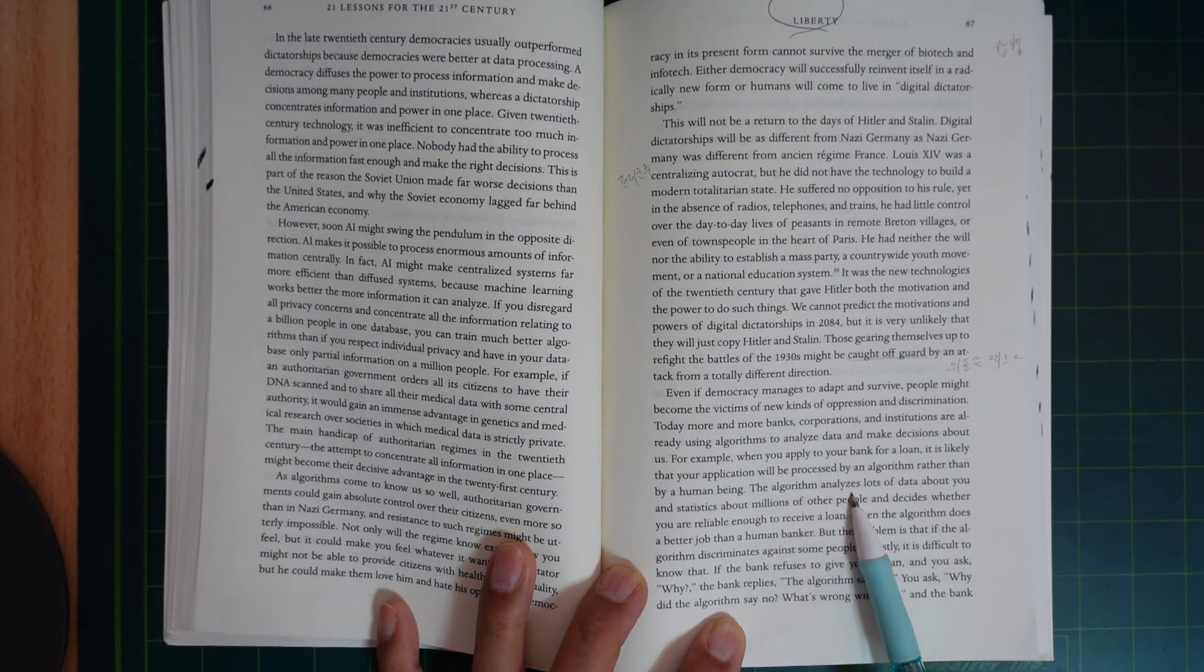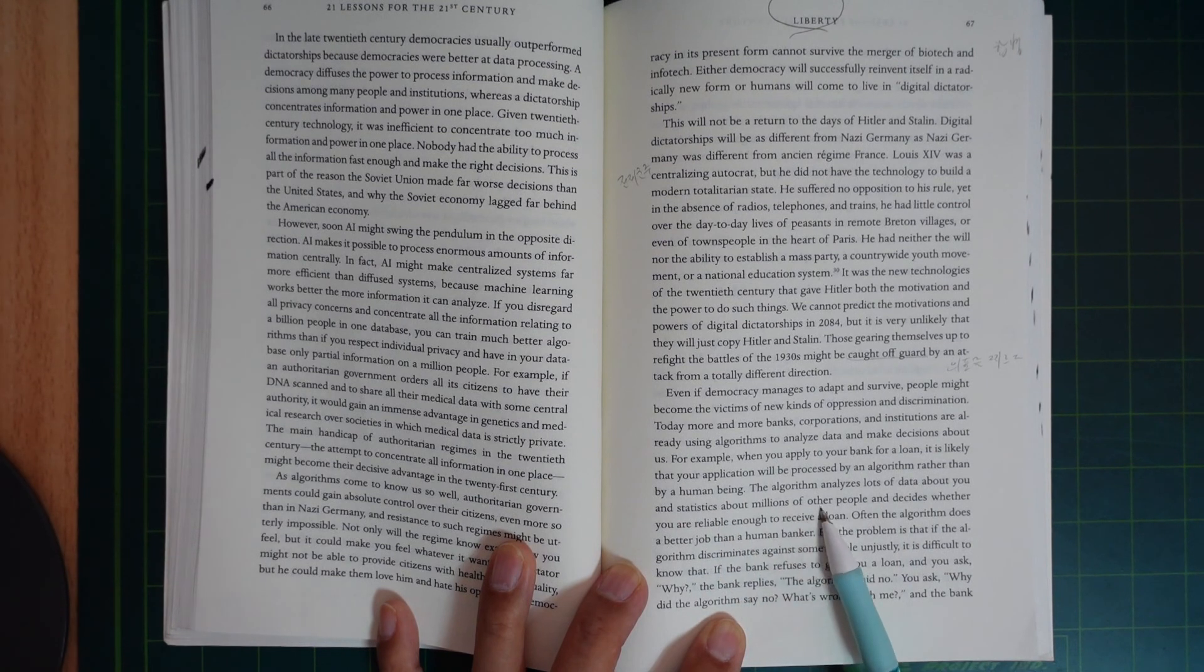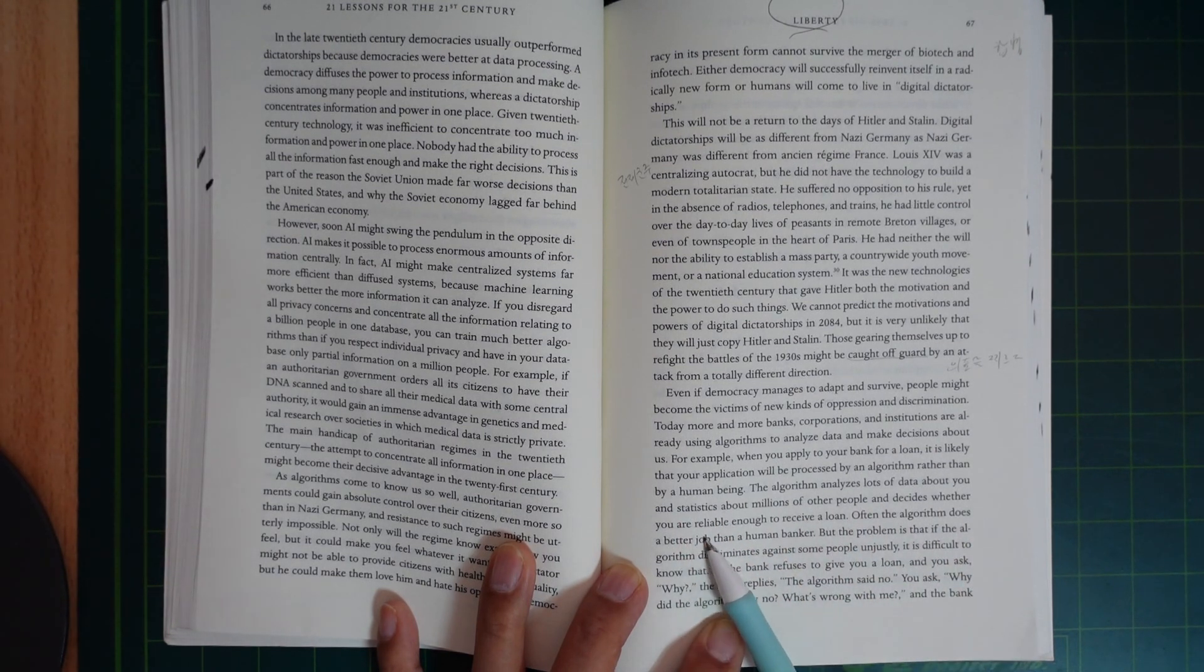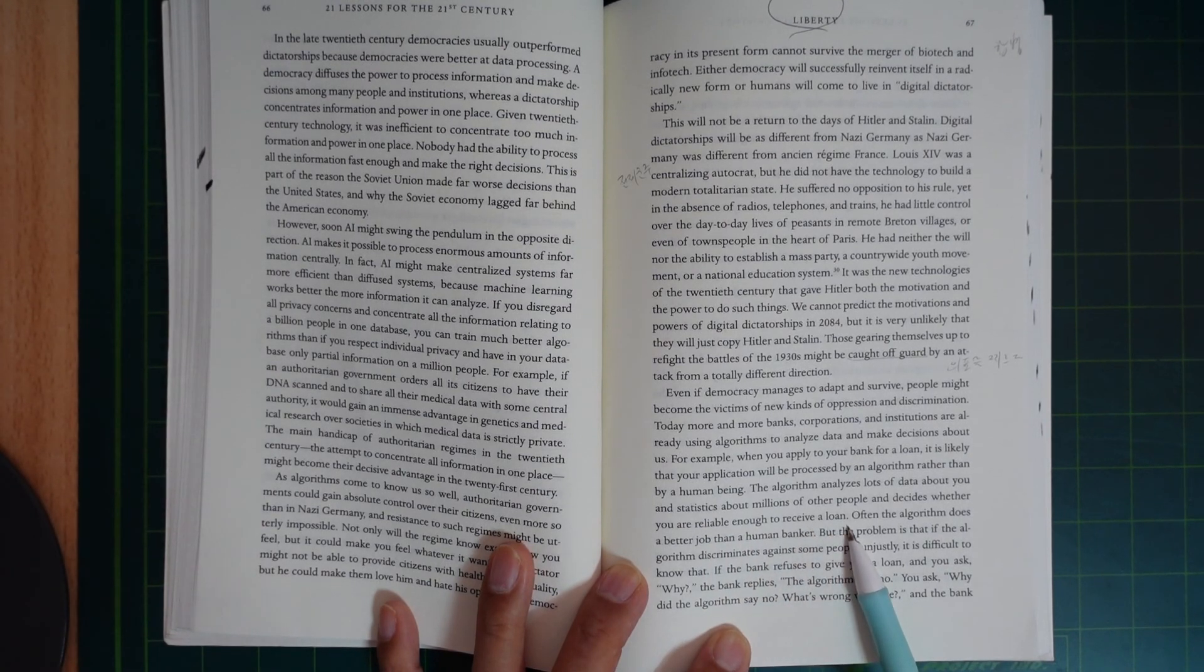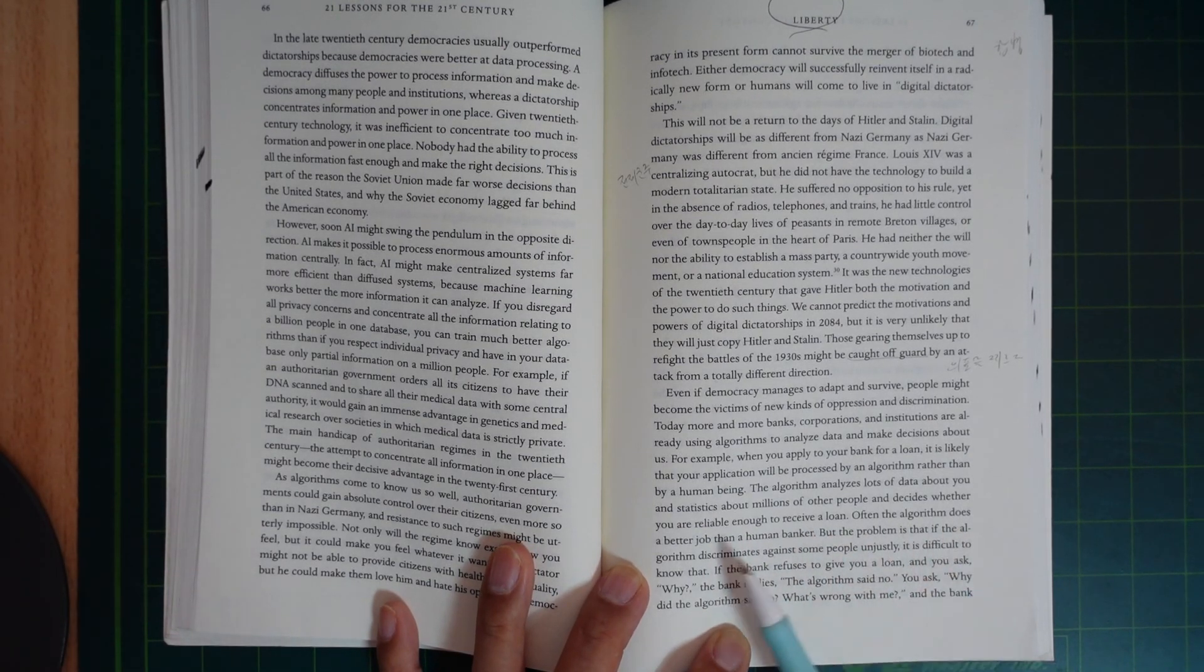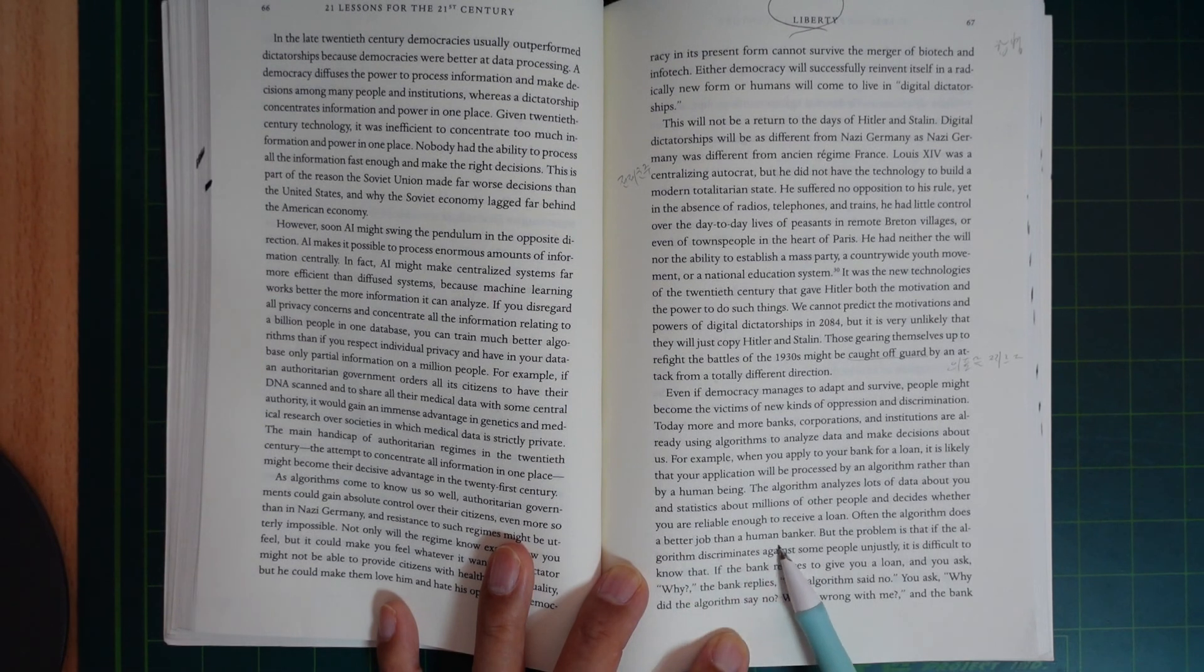The algorithm analyzes lots of data about you and statistics about millions of other people and decides whether you are reliable enough to receive a loan. Often an algorithm does a better job than a human banker.